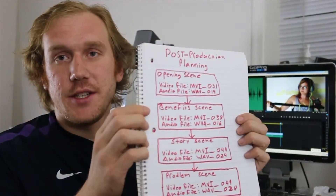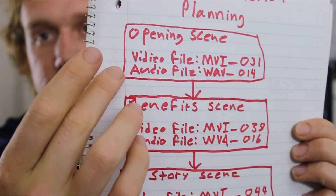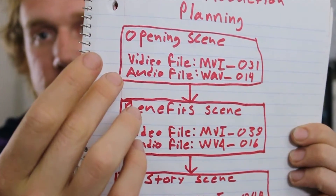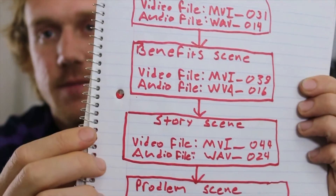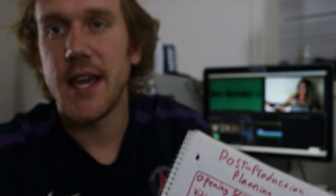One thing I like to do is plan out the files in each sequence accordingly. As you can see here, I have the opening scene with my video and audio files. This is good to help organize yourself when you're going through dozens upon dozens of takes and different audio files to sync up to your video. This will save you a huge amount of time because the editing process can be very tedious if you are disorganized.